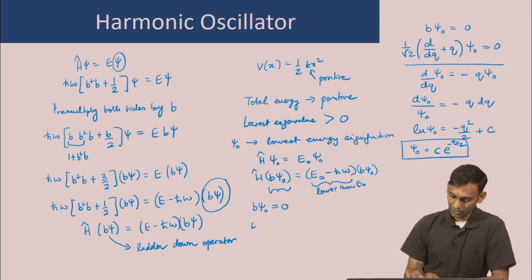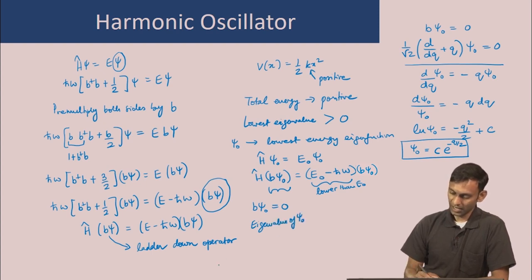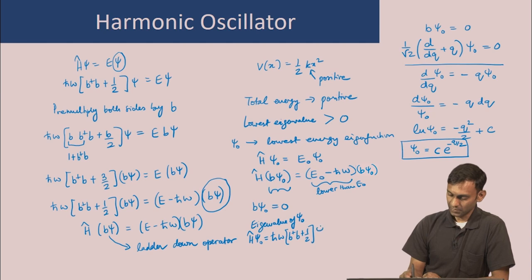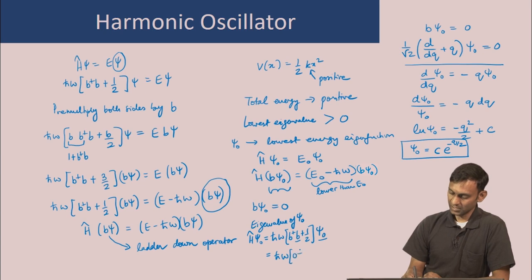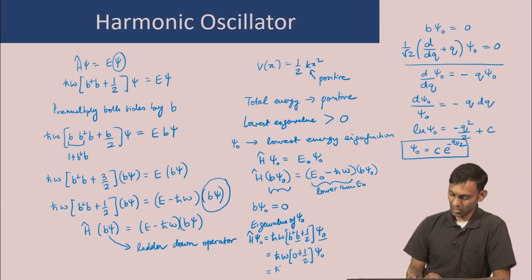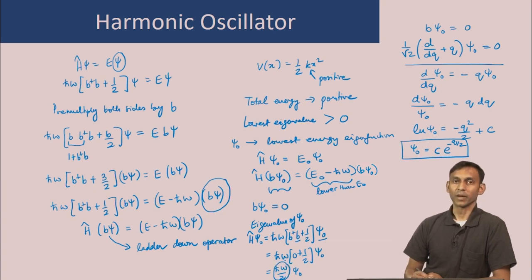This gives us the functional form of the lowest eigenfunction of the harmonic oscillator Hamiltonian. Furthermore, the eigenvalue of psi 0 is found from H psi 0 equals h-bar omega (b-dagger b plus half) psi 0. Since b psi 0 equals zero, this becomes h-bar omega times (0 plus half) psi 0, so the eigenvalue is simply h-bar omega over 2.